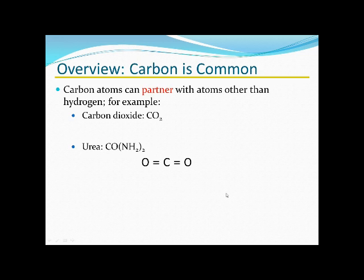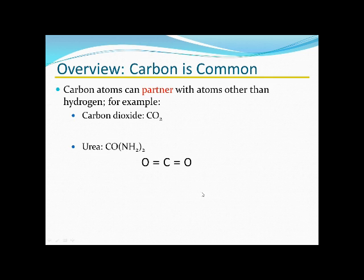So carbon is very versatile. Carbon doesn't necessarily have to be bonded to additional carbons. Here you have two examples of waste products produced as biological metabolism runoffs. Carbon dioxide is a common waste product produced from many chemical reactions in biological systems. Urea is also produced from protein metabolism. In both cases, carbon is actually bonded to oxygen — here with a double bond to oxygen.